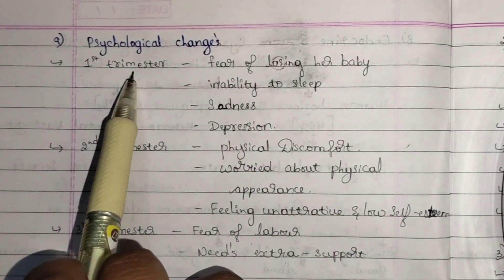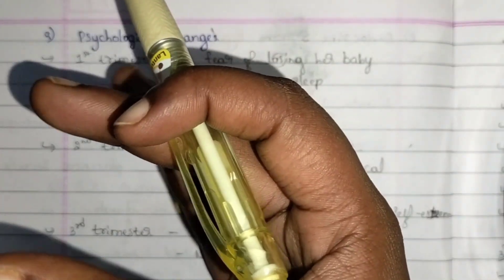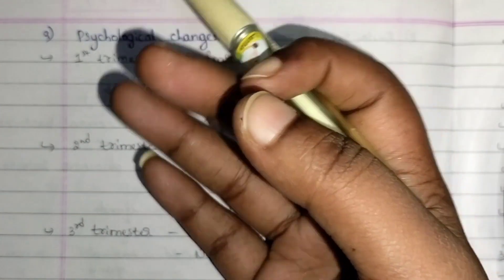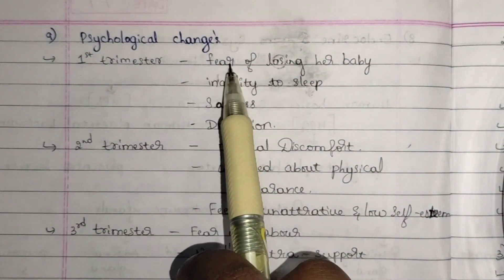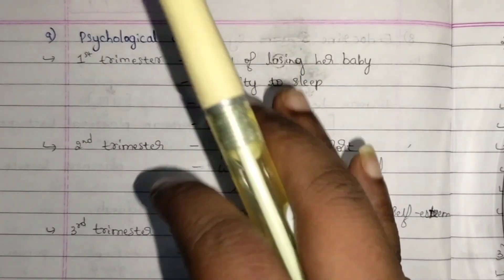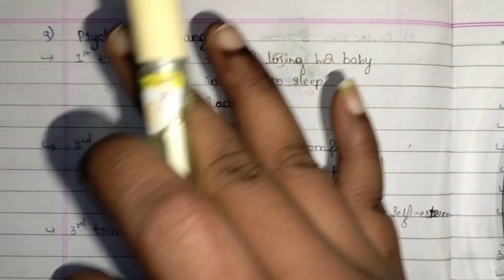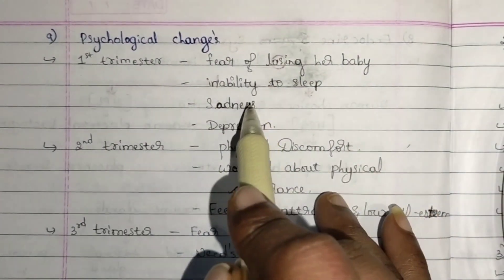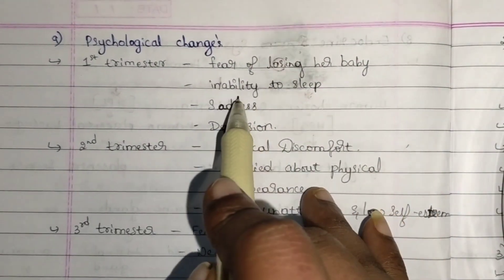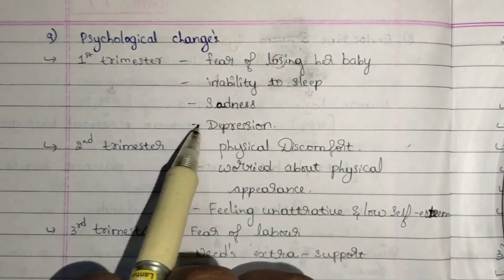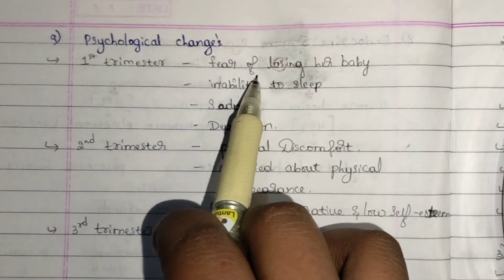Psychological changes can be seen in three ways, one for each trimester. In the first trimester, at the beginning of pregnancy, the woman will have the fear of losing her baby. This is not seen in every woman but is observed in most. Because of that, there is sadness, depression, and they will be unable to sleep well — the sleeping pattern will be disturbed.